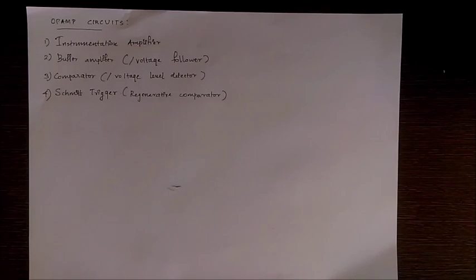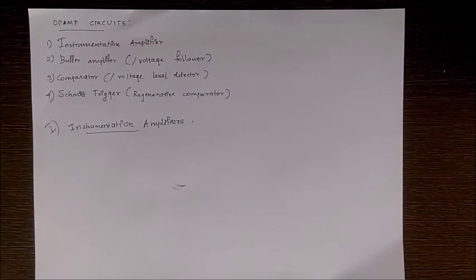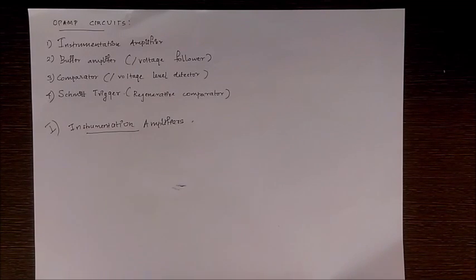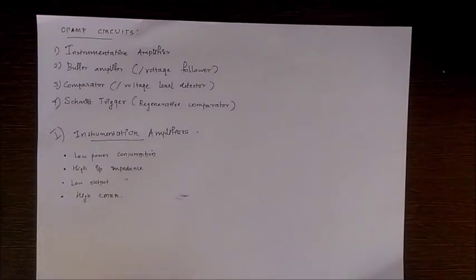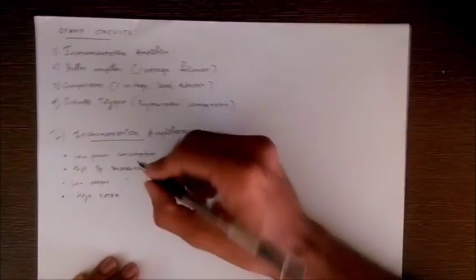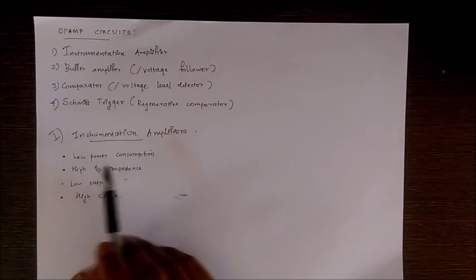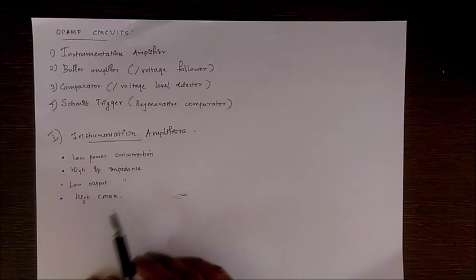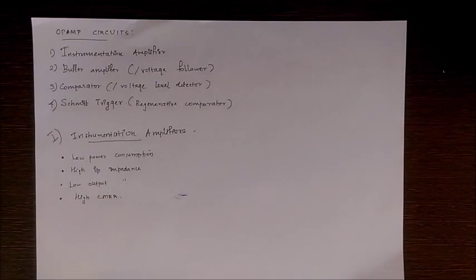Let's move on to our first type: the instrumentation amplifier. These are used in instrumentation applications where transducers sometimes fail to provide sufficient power to drive the next stage of processing. So we use the instrumentation amplifier to supply sufficient power. An instrumentation amplifier should have the following characteristics: low power consumption, high input impedance, low output impedance, and high CMRR.